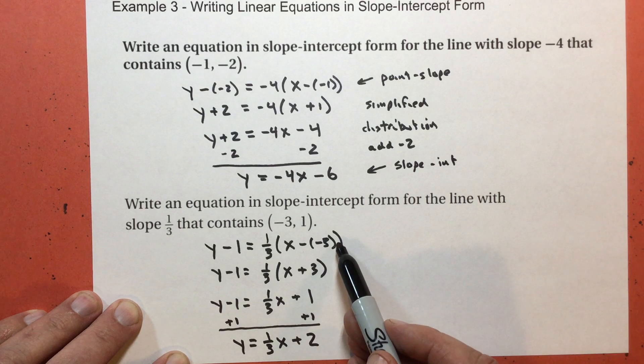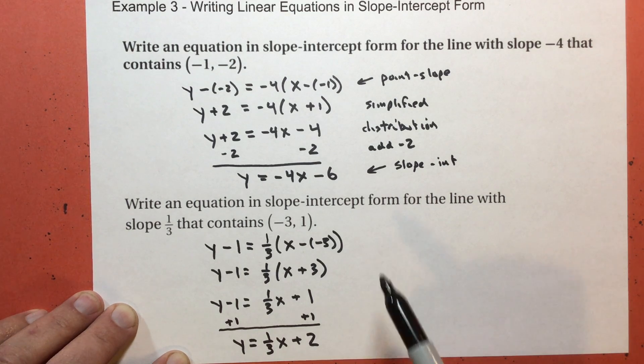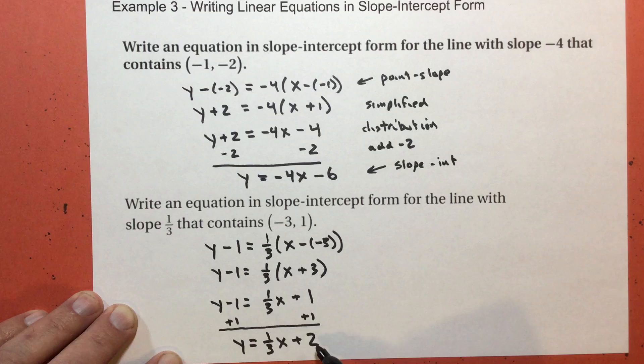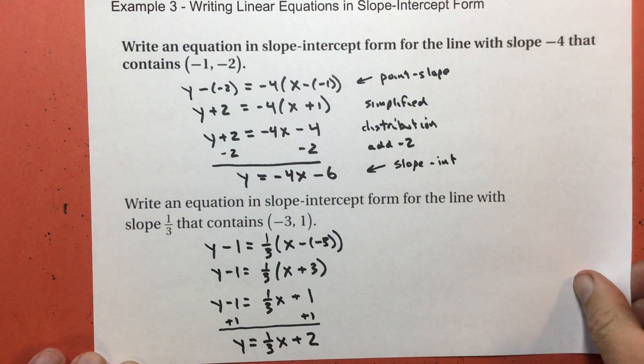So, again, this is slope intercept form. This is point slope form. This is slope intercept form. We will do lots more of those when we get to the guided practice problems in an upcoming video.